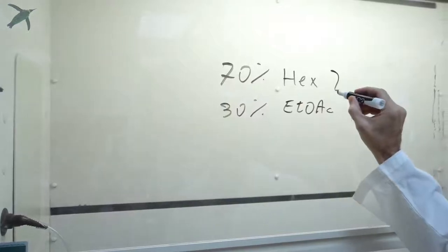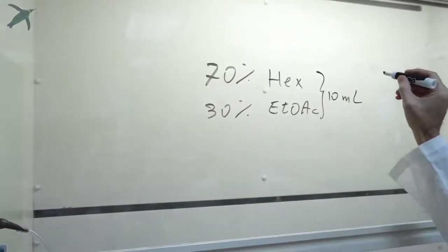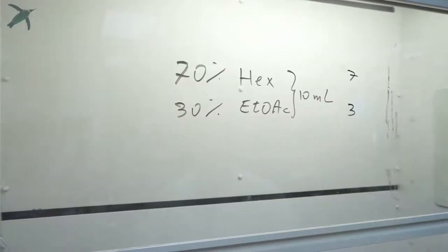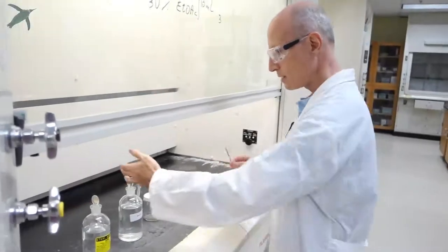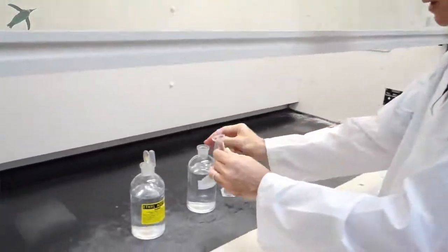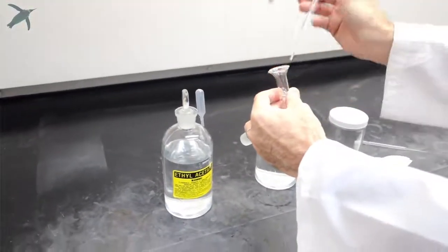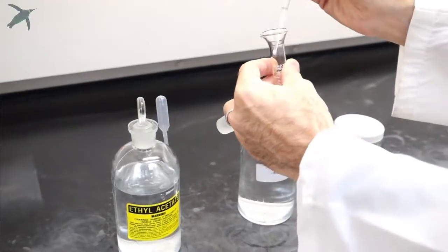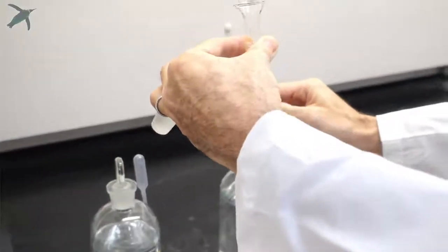You want to make 10 mLs, so this is 7 mLs of hexane and 3 mLs of ethyl acetate. With your 10 mLs graduated cylinder, you go to the hexane bottle and take your 7 mLs. This needs to be fairly precise, so you want to be at 7 mLs.